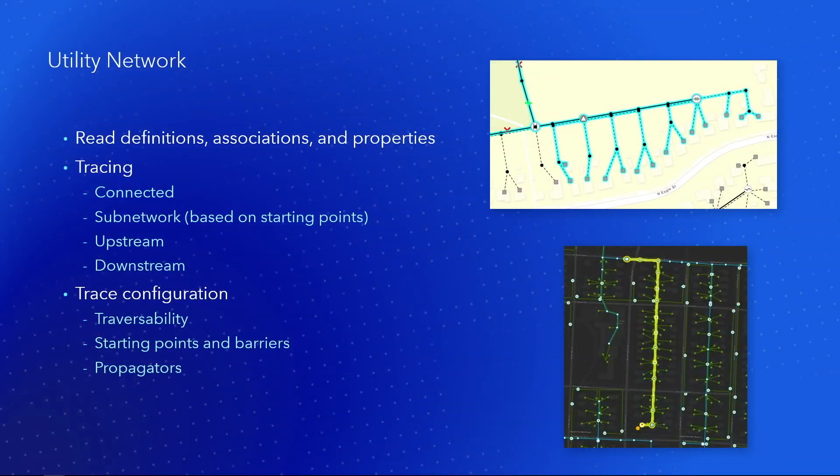In the area of utility networks, the last few releases have been getting progressively more and more functionality. You can read definitions and the associations of all the device types on the utility network. You can perform tracing — connected traces, sub-network, upstream, downstream — and for all of these trace types, you can now control the parameters to get the behavior that you want within your tracing.